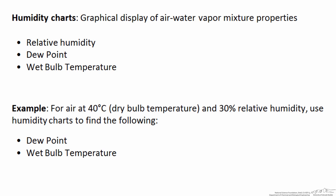In our example we have air that's at 40 degrees dry bulb and 30 percent relative humidity, and we're going to use the charts to find the dew point and wet bulb temperature. If we say that the dry bulb temperature is 40 degrees, that's the temperature that we're used to thinking about — the kind that could be measured with a thermometer. This has nothing to do with the moisture content of the air.